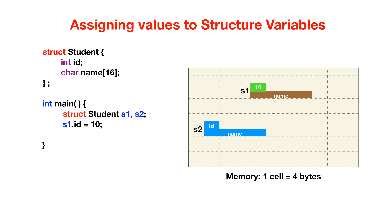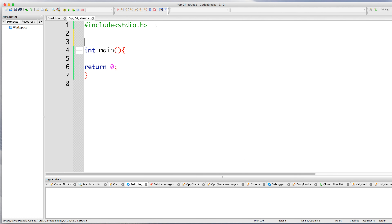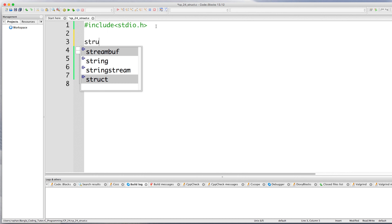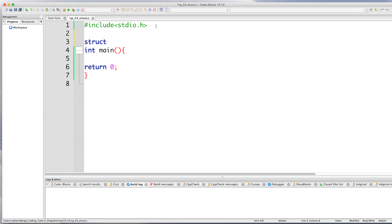If we write s1.id = 10, it means in memory the id field of the s1 structure will store the value 10. If we write strcpy(s2.name, "Rehan"), that string copy function — which we covered in a previous lecture — copies the string 'Rehan' into the name field of s2.